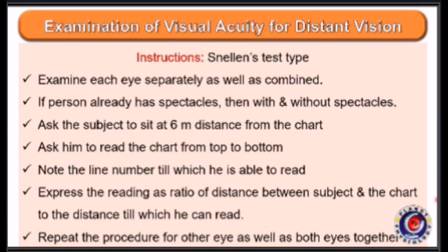The subject reads the chart from six meters distance from top to bottom and the examiner notes the number of lines till which he is able to read properly. The finding is expressed as a ratio of the distance between the subject and the chart to the distance till which he can read the lines. The procedure is repeated for each eye separately and then for both eyes.